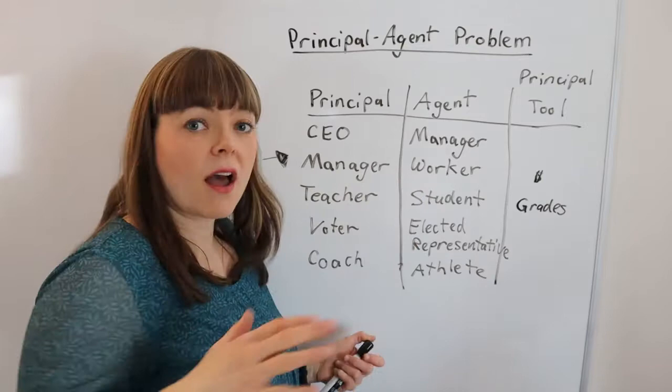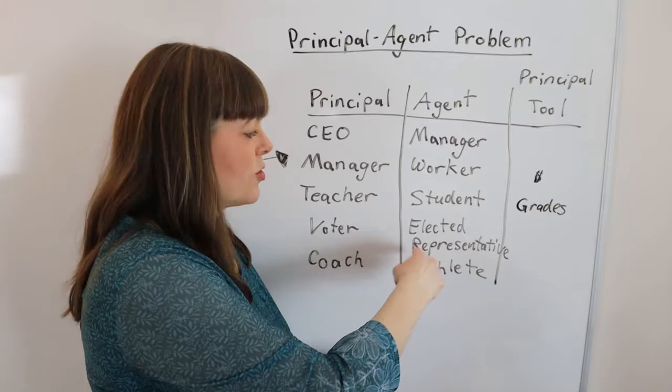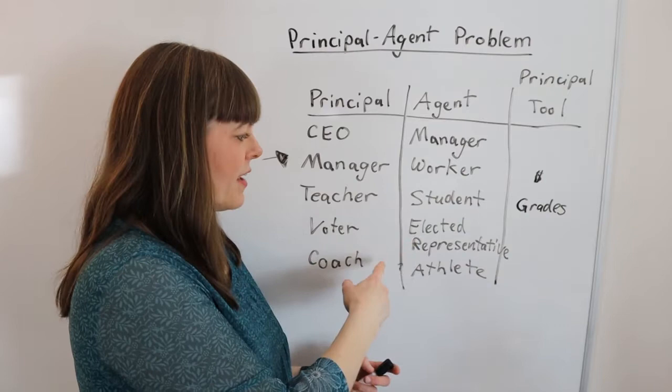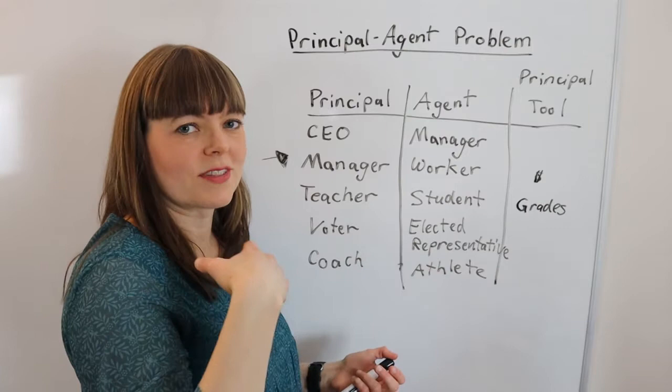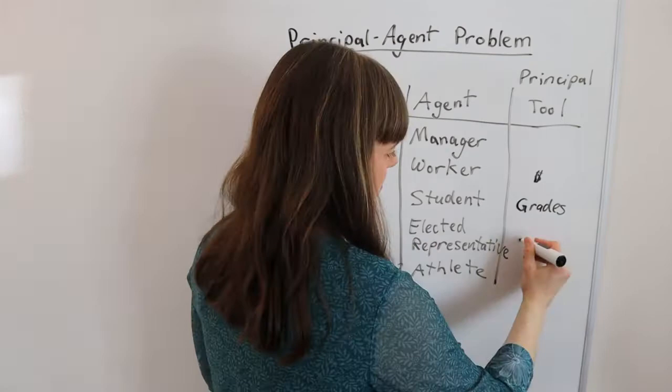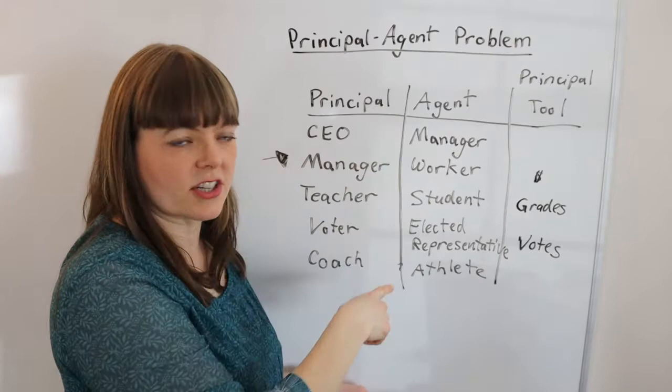For example, the voter is electing a representative to make governance decisions on behalf of the voter. Even though some people might think of the elected representative as higher in some hierarchy, actually the voter is trying to incentivize through votes and the threat to not reelect. So the voter is the principal, and the elected representative is the agent working on behalf of the voter. Coach and athlete is another example.